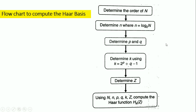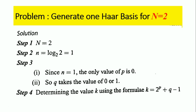Now we will go through a problem so we can understand the Haar transform more easily. The problem is: generate the Haar basis for N equal to 2. For this, the order is 2, and from this we calculate the small n value: n equals log 2 base 2, which is nothing but 1.